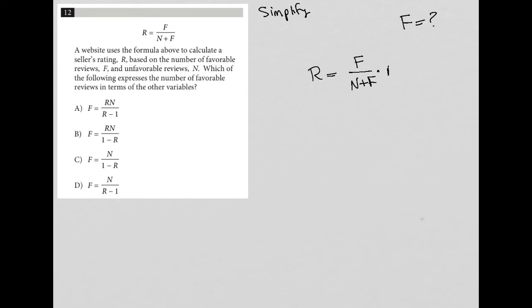So I'm going to start off by multiplying both sides by N plus F. That gets rid of that on that side, and that leaves me with R parentheses N plus F on the left side. I'll just move the R to the front. Equals F.